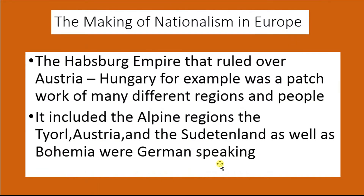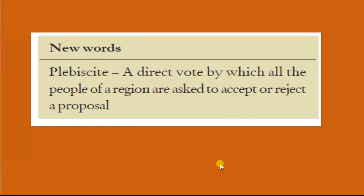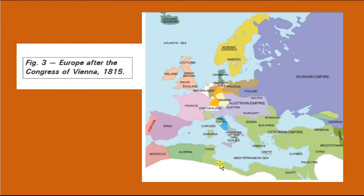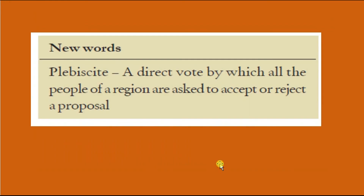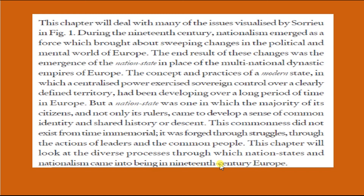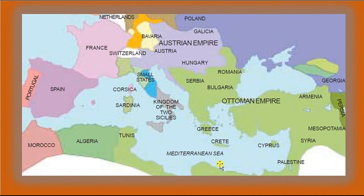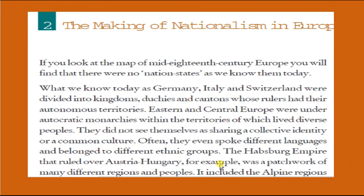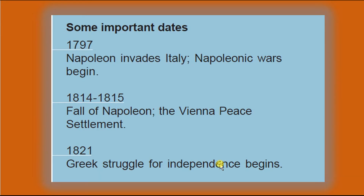The Making of Nationalism: how various nations tried to identify themselves as distinct by projecting their culture, language, literature, flag, etc. The Congress of Vienna is important — after the Battle of Waterloo in 1815, the countries that collectively defeated Napoleon Bonaparte signed the Treaty of Vienna, attempting to stop the expansion of France. Important dates include the invasion of Italy, the fall of Napoleon Bonaparte at the Battle of Waterloo, and the Greek struggle for independence.